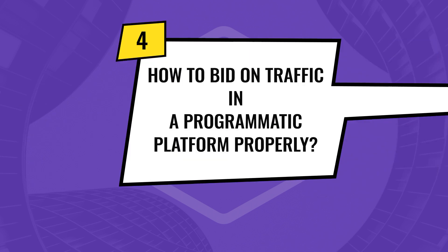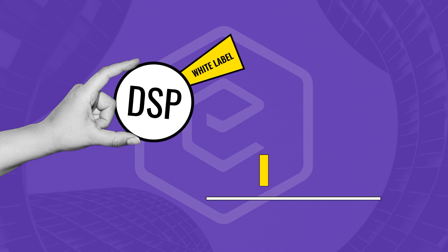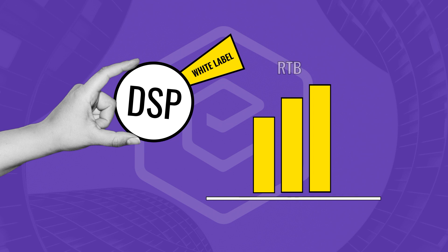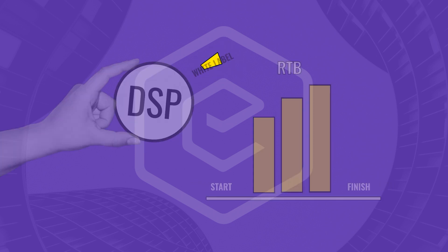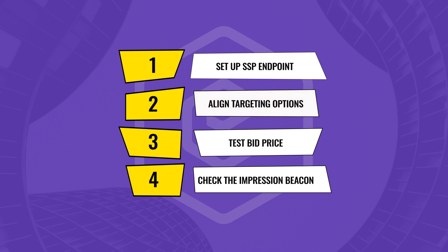How to bid on traffic in a programmatic platform properly? That's a more complicated question, especially if you use a white-label DSP. Before launching a campaign, you have to make sure the RTB auction dynamics work properly from start to finish. For this, you set up the SSP endpoint properly, make sure you receive the bid request with all required data, align targeting options to the SSP's traffic, and test CPMs to determine which price is enough to win impressions. Also, check if your impression beacon reports impressions and how this data correlates with your supply partner's data.